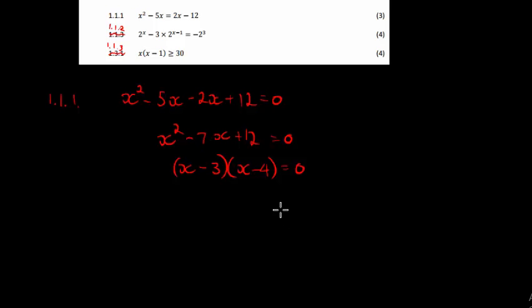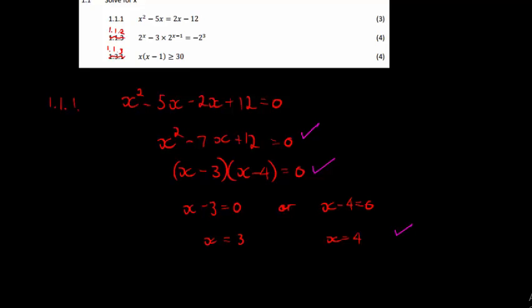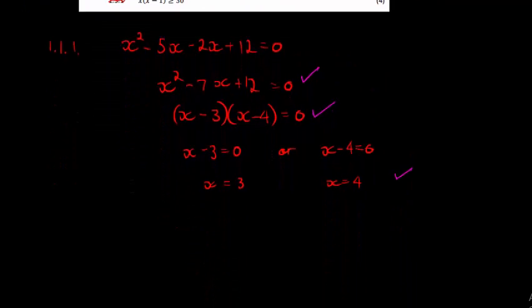So now I've got two things. When I multiply these two things I get 0, which means either this thing must equal 0 or this must equal 0. This can only be 0 if X is equal to 3, and this can only be 0 if X is equal to 4. So basically how this marking worked is you got one mark for writing it in standard form, one mark for correct factorizing, and one mark for solving it correctly into two answers.